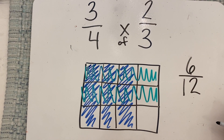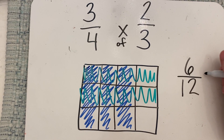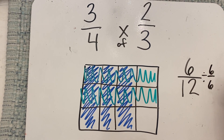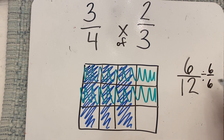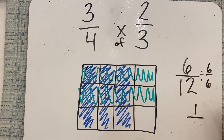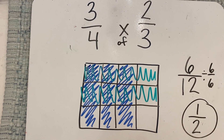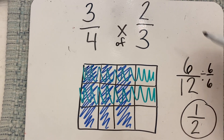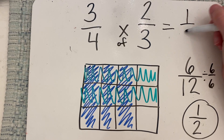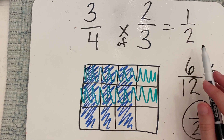So my answer would be six-twelfths. But I can simplify that — both of these numbers can be divided by six. Six divided by six is one, and 12 divided by six is two. So one-half of my box was shaded twice. That means three-fourths times two-thirds equals one-half, or three-fourths of two-thirds is one-half.